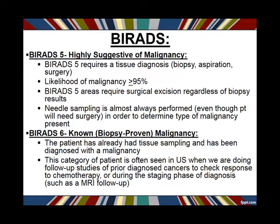BI-RADS 5 is highly suggestive of malignancy — likelihood of malignancy greater than ninety-five percent. These are our slam dunks: you look at something and you know it's a cancer. No matter what a biopsy shows, we're going to take it out surgically. BI-RADS 4C and BI-RADS 5 almost always result in surgery, no matter what the pathology results might be for a biopsy.